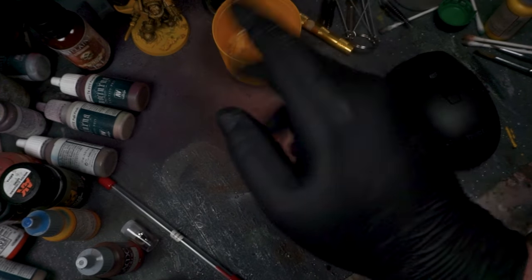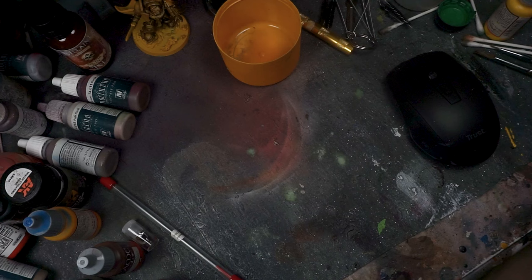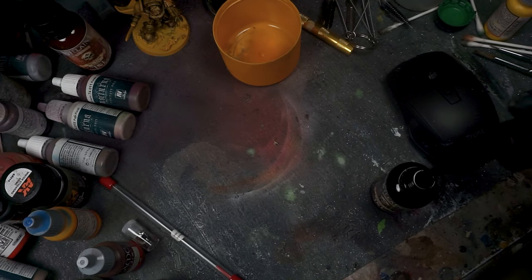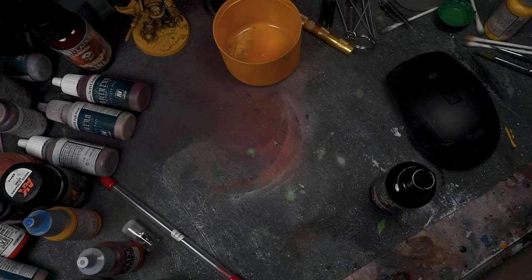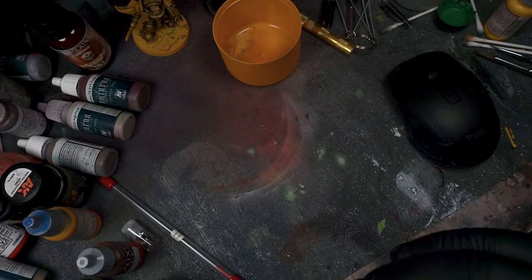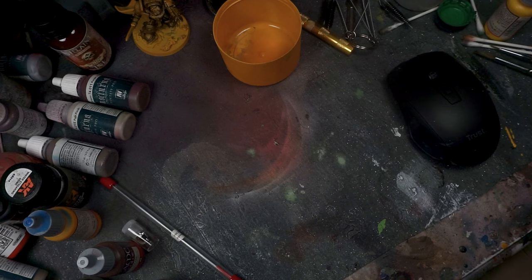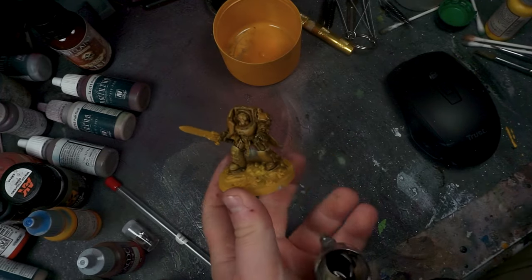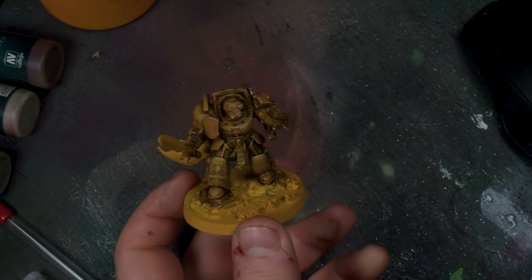Next we are going to go to our Villainy Ink, our Agrax Earthshade. We're going to shake it up and put a little bit into the airbrush. We're just going to blast him and see if it flows out all right.